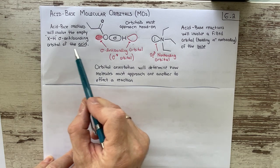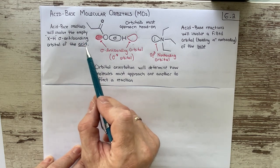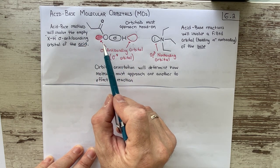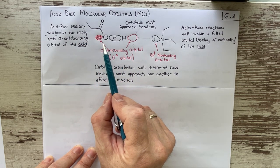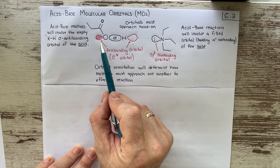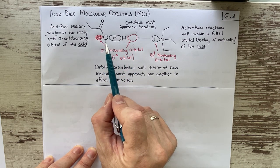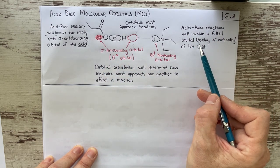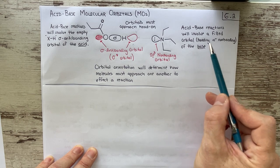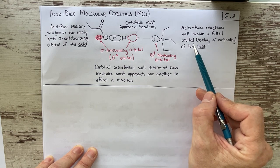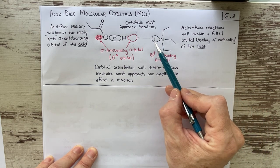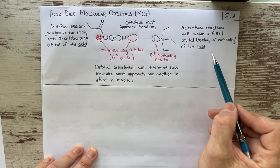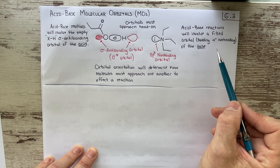The orbital orientation — whether sp3, sp2, etc. — determines how the molecules have to approach each other for that proton transfer to occur. When we think about the molecular orbitals, the acid of the reaction always uses its antibonding orbitals, and the base always uses a filled orbital, in this case a non-bonding orbital, though it could also be a bonding orbital.